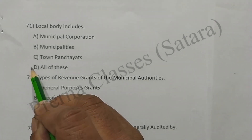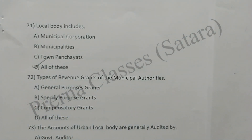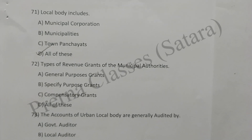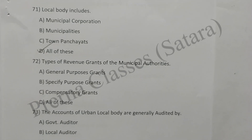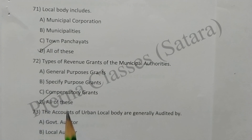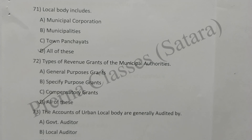Question 71: Local body includes municipal corporation, municipalities, town panchayat, and all of these. Option D is correct. Question 72: Types of revenue grants of municipal authorities are general purpose grants, special or specific purpose grants, compensatory grants, and all of these. Option D is correct. Question 73: Accounts of urban local bodies are generally audited by government auditor. Option A is correct.